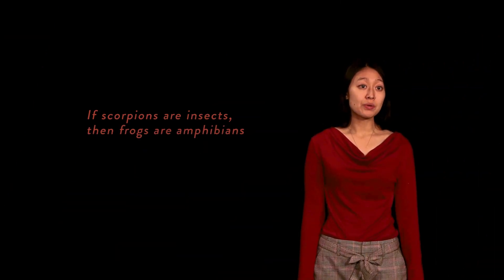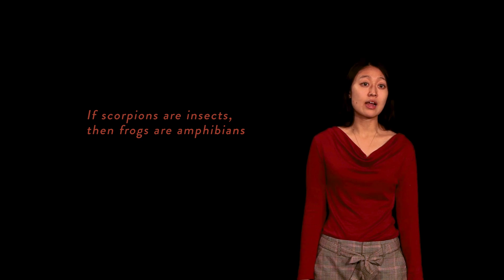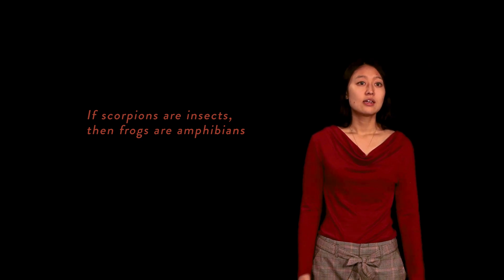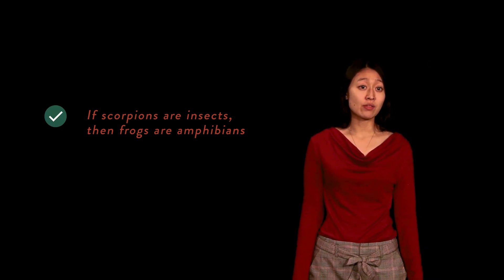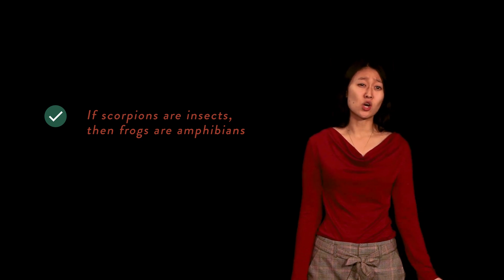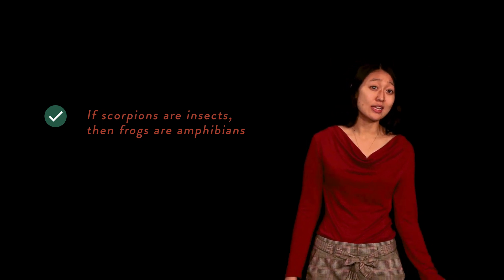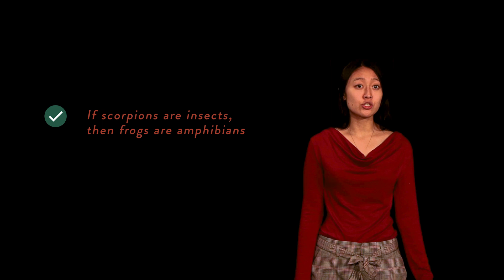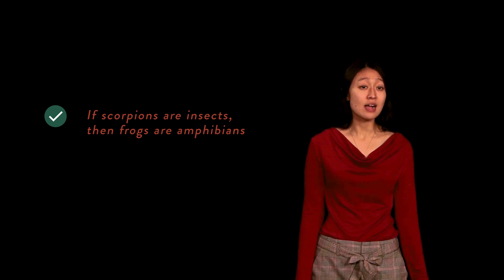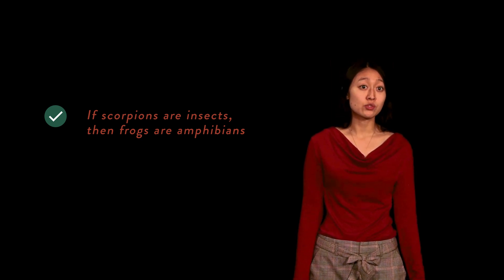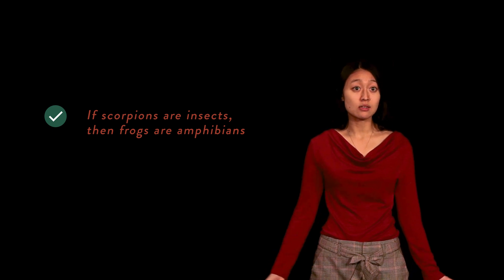Finally, let's take the case: if scorpions are insects, then frogs are amphibians. In this case, the hypothetical is true despite the fact that the first proposition is false — scorpions are arachnids, not insects. The truth of this proposition lies in the fact that frogs are in fact amphibians, so the latter proposition would be true whether scorpions turned out to be insects or not.